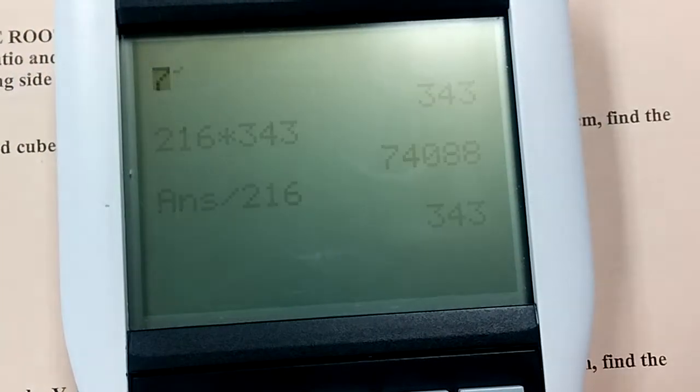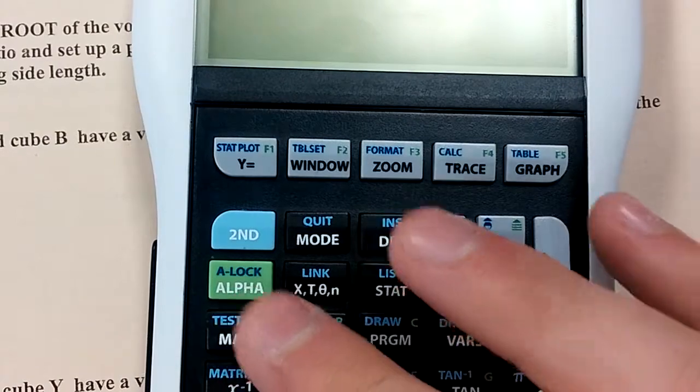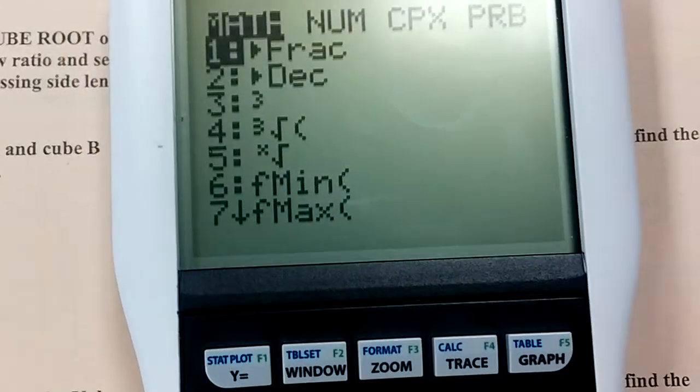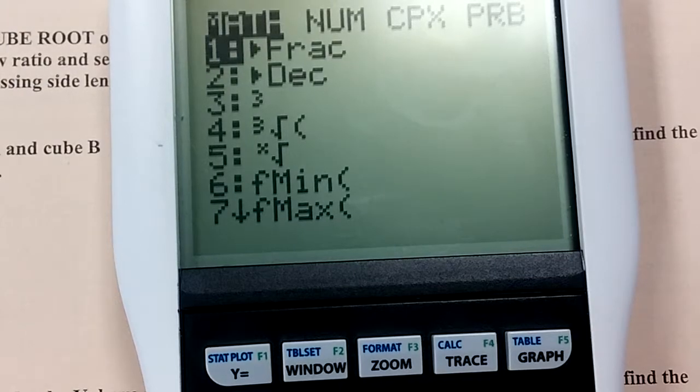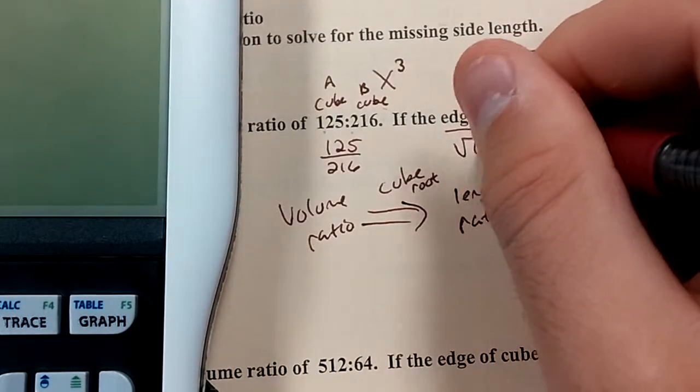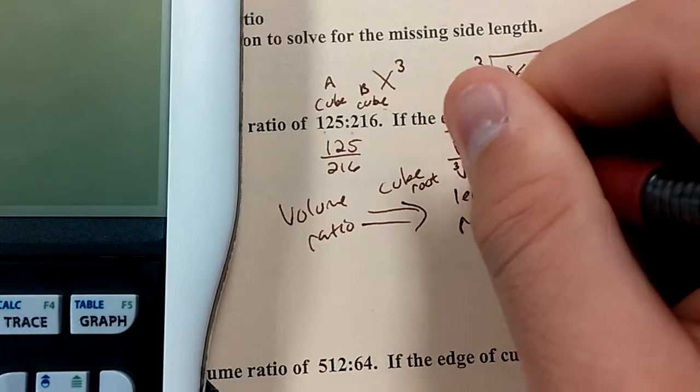Now in the calculator, the TI-84s we use here, you press the math button, which is right there. And option number four is your cube root. So you can press the number four or you can arrow down to it. Type in the number you want to cube root. So I want to cube root 125 and I want to cube root 216.